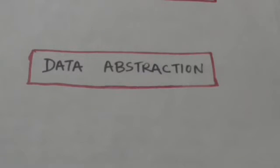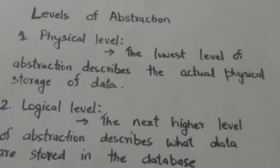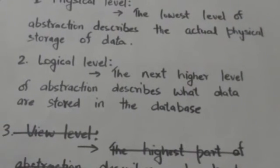There are several levels of abstraction. The physical level is the lowest level of abstraction which describes the actual physical storage of data in memory. The physical level describes complex low-level data structure in detail.